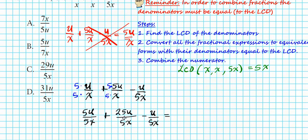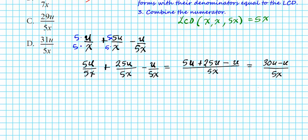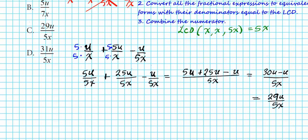Now that all denominators are identical, we focus on the numerators: 5U plus 25U minus U over 5X. That gives 30U minus U over 5X, which equals 29U over 5X. The answer is option letter C.